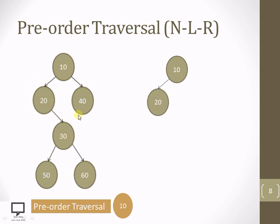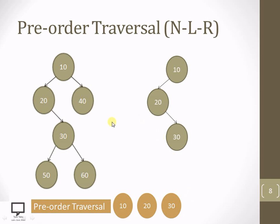Root node is 10 — process it. Check whether 10 has a left child: yes. Step down to left child 20, make it root, and process it. Check whether 20 has a left child: no. Check whether 20 has a right child: yes. Step down to right child 30, make it root, and process it. Check whether 30 has a left child: yes. Step down to left child 50, make it root, and process it. 50 has no left child and no right child — done with this subtree, go backward.